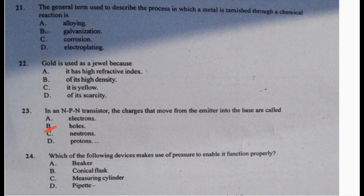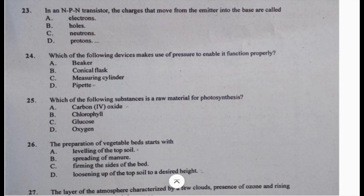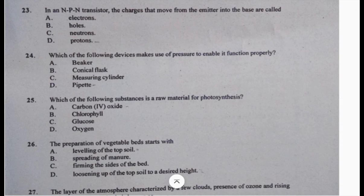24: which device makes use of pressure to enable it to work or function properly? Beaker - no, conical flask - no, measuring cylinder - no. 24 is D, pipette. 25: which substance is a raw material for photosynthesis? Carbon dioxide, chlorophyll, glucose, oxygen. The odd one here is carbon dioxide.